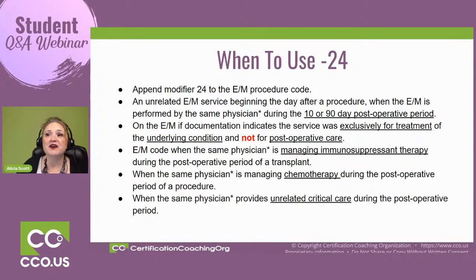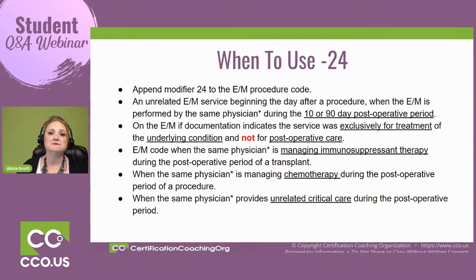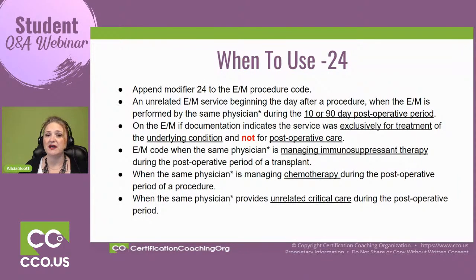Another example: same physician managing chemotherapy during the post-operative period. A patient has a bilateral mastectomy due to breast cancer and is on chemo — the management of the chemo during the 90-day period would not be the same as the mastectomy procedure. And then unrelated critical care: the patient throws a pulmonary embolism after a procedure or gets a blood clot right after a procedure — that would be unrelated critical care and would be appropriate for modifier 24.